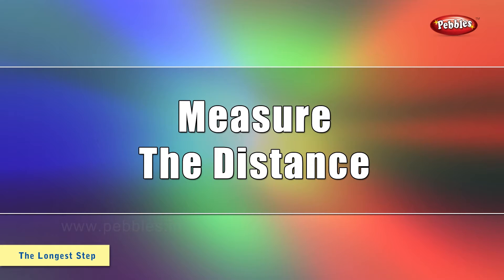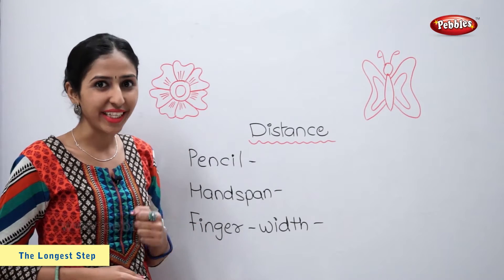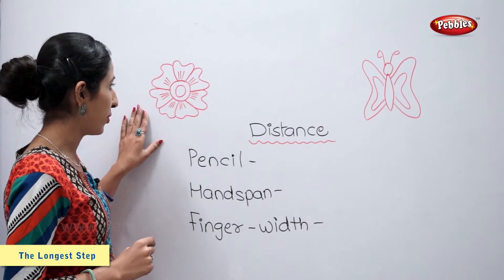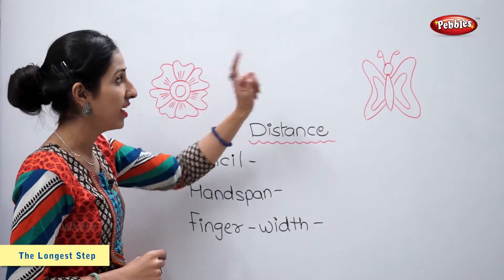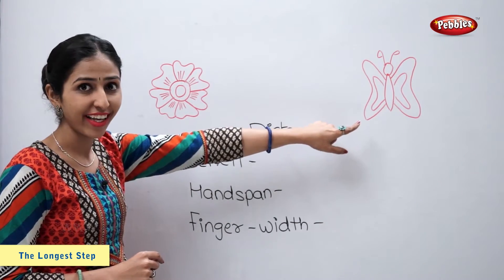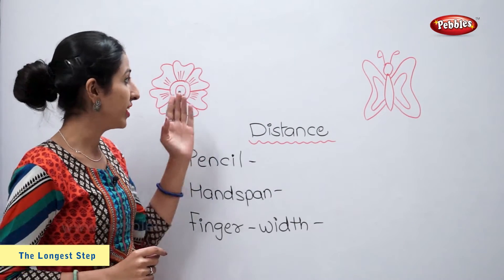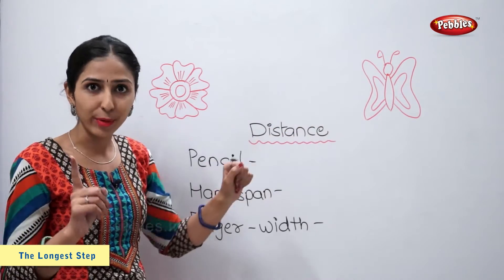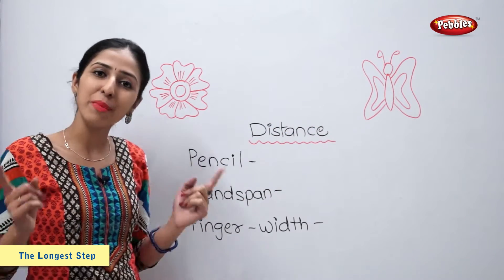Measure the distance. Students, as you can see there is a flower on the board and at some distance there is a butterfly. Now let us measure the distance between this flower and the butterfly using these units of measurement.